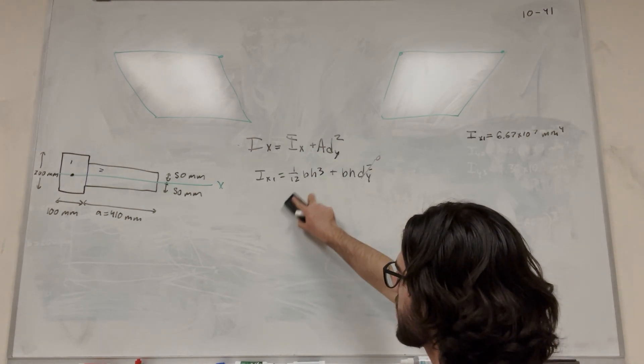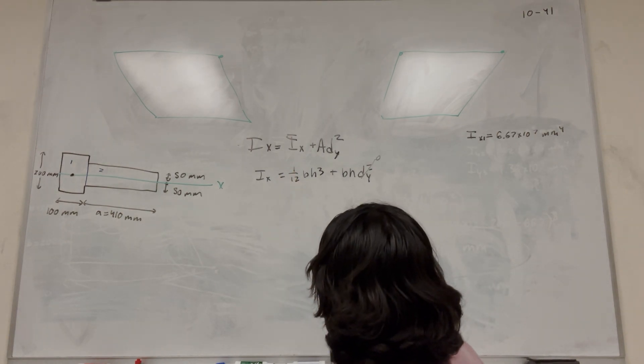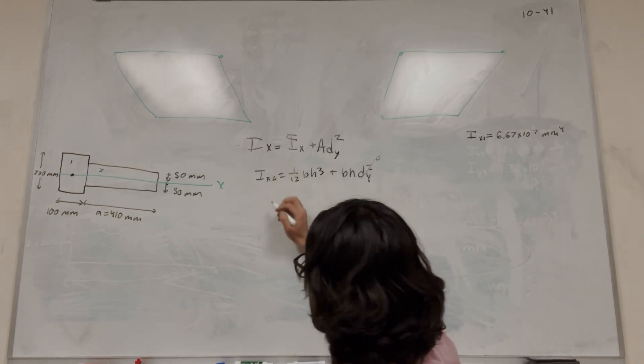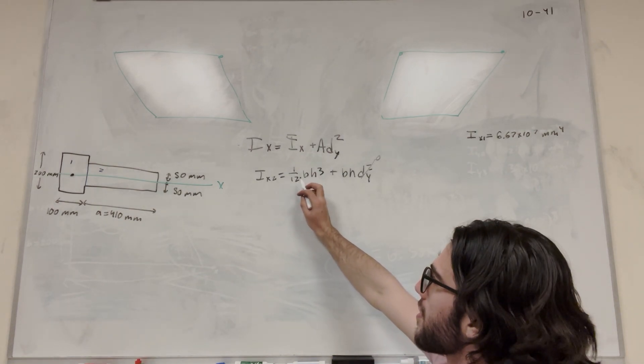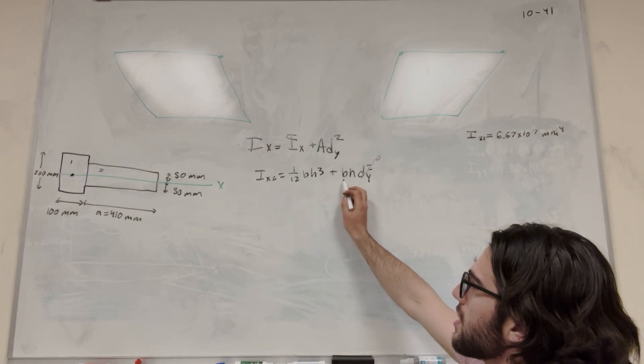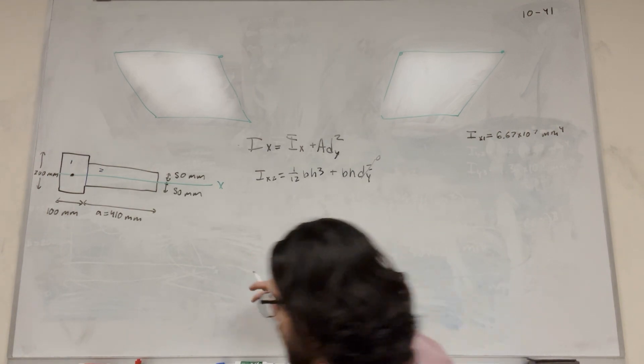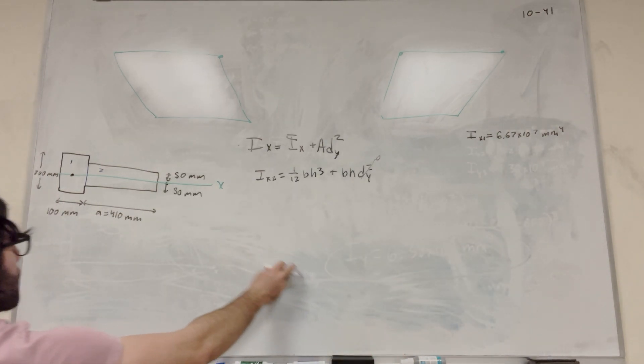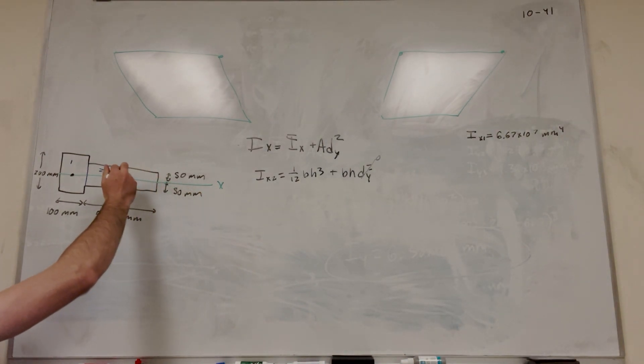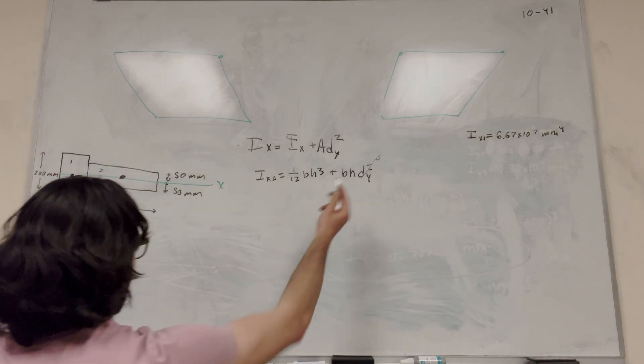Let's do it for the second one. Same thing, it's a rectangle, so we use the same equation for I bar. Area is base times height for a rectangle. Let's find where the center of mass is. This rectangle is also symmetrical across the x-axis, so its center of mass is on the x-axis, which means again dy equals 0.